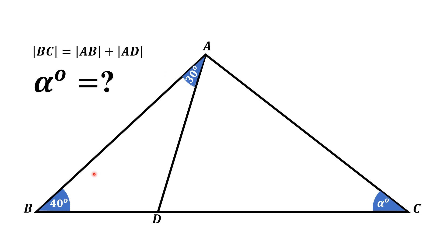From triangle ABD, by the exterior angle theorem, angle ADC is equal to angle ABD plus angle BAD, which is 30 degrees plus 40 degrees, so angle ADC equals 70 degrees.